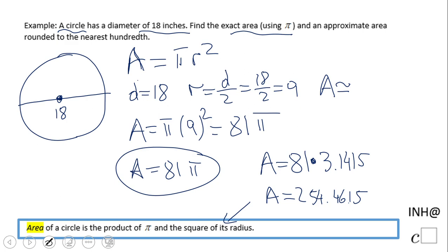I'm looking to the thousandths place, so that means 254.46 because we do not need to round up.